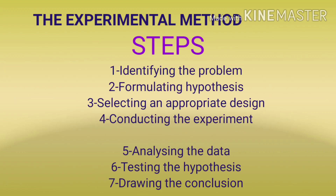Next we will discuss the steps of experimental methods — which steps are followed. First, identifying the problem. The first step is to identify the problem, as there are many behavioral problems. Then, formulating the hypothesis. Then, selecting an appropriate design — you can select a one-group design, two-group design, or multi-group design. Then, conducting the experiment. Then, analyzing the data.